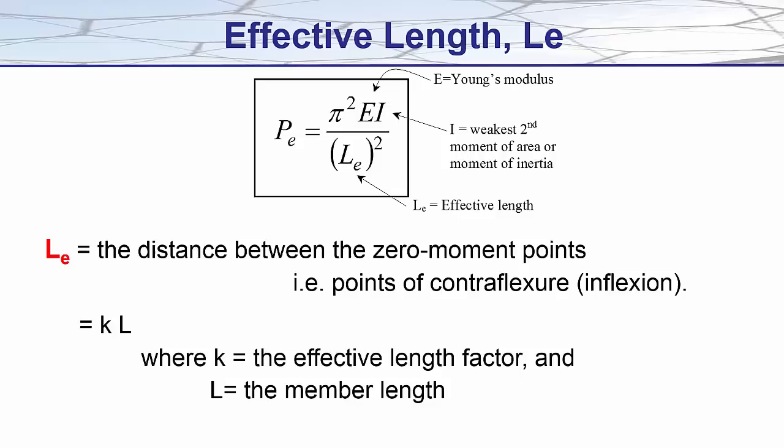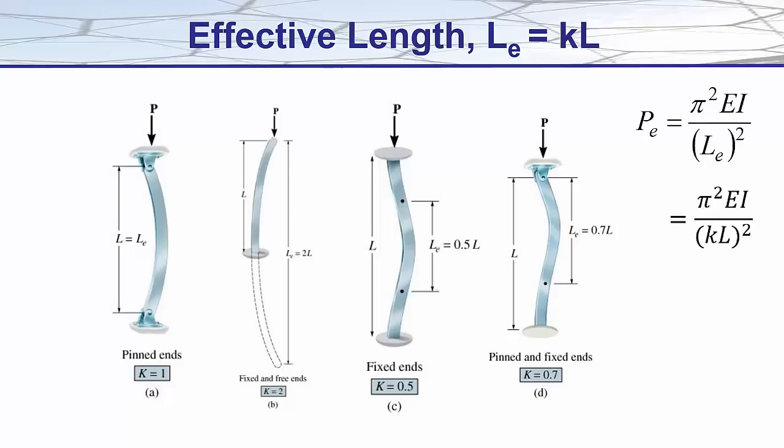Here are four common cases of different end restraint conditions. In A we have both ends being pinned. In B one end is fixed and the other is free. I call this the flagpole case. In case C we have both ends as being fixed, and in case D we have a fixed end and a pin end. And the resulting K values can be seen here as varying between 0.5 and 2.